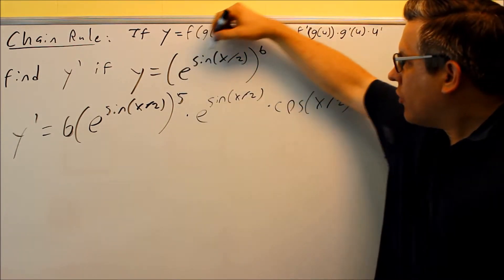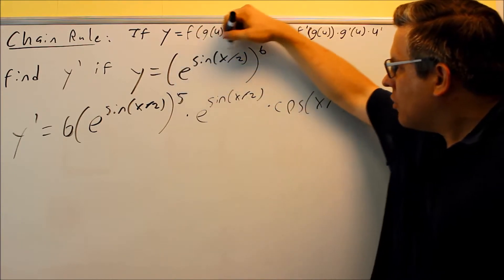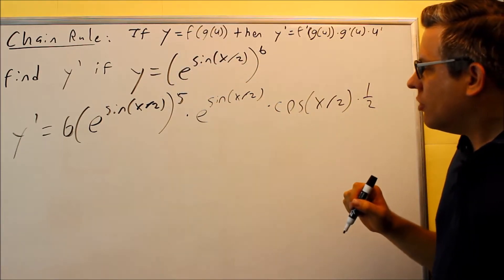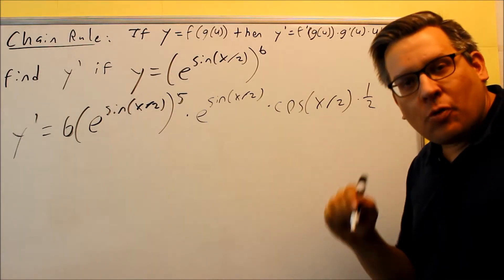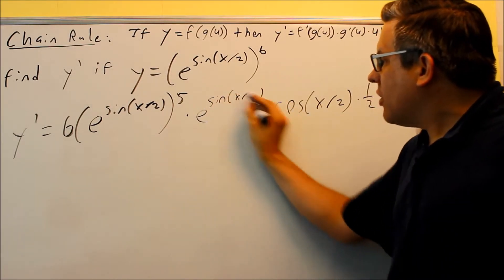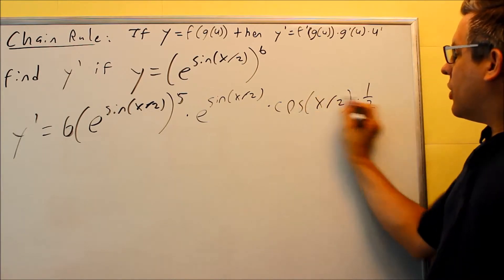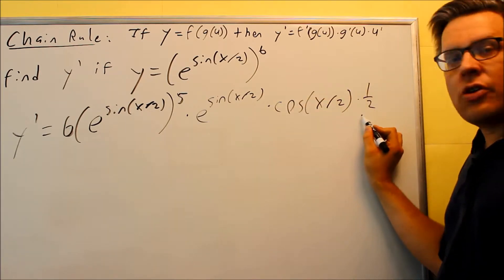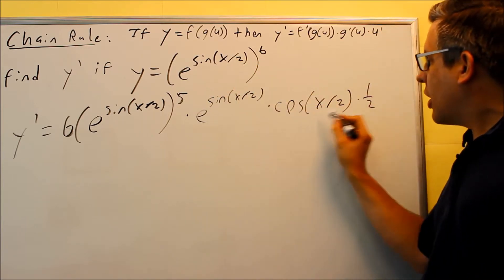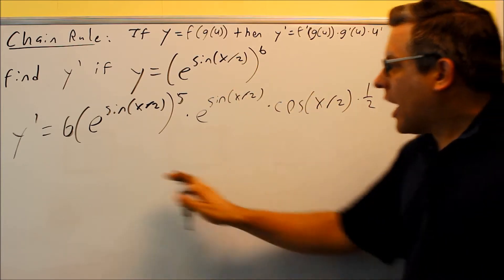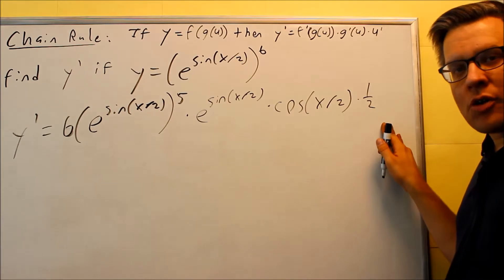Next, I want to do the derivative of just this part on the inside. The derivative of e sine x over 2. The derivative of e to the u is e to the u times u prime. Here's e to the u. This whole thing here is considered u prime. So the derivative of sine of x over 2 is cosine x over 2 times 1 half. So you've got all four of these pieces multiplied together.